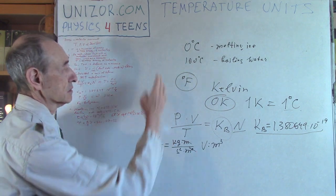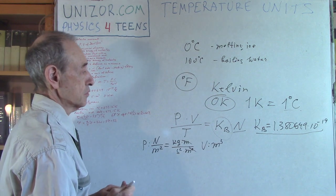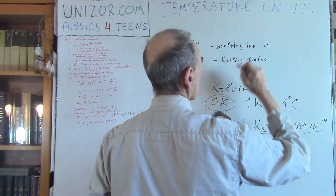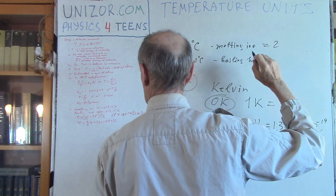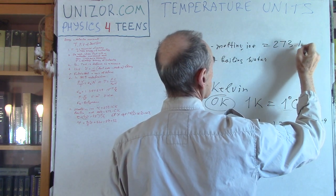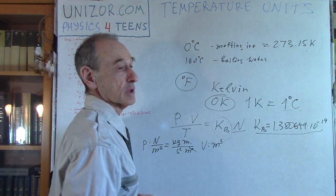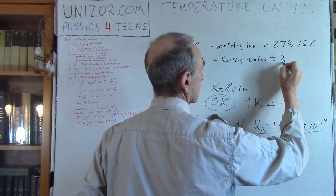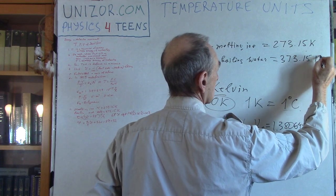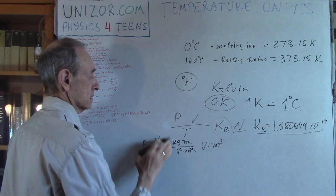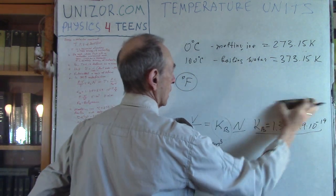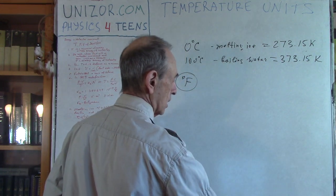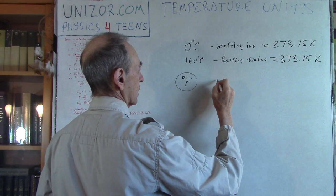Now let's go back and define all other units. We have melting ice as 273.15 Kelvin and boiling water is plus 100. Again, it's all from the definition.